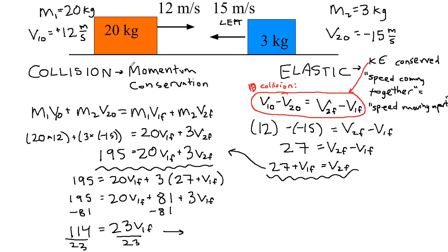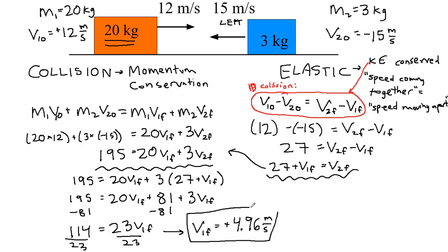The 20-kilogram block — mass 1 — will be moving at positive 4.96 m/s after the collision. This means it is still moving to the right but has slowed down considerably, from 12 m/s to about 5 m/s. It didn't bounce back because it has so much mass; it just slowed down. The smaller mass, on the other hand, is probably going to be bounced back quite quickly since kinetic energy is conserved and this block has lost a lot of it.